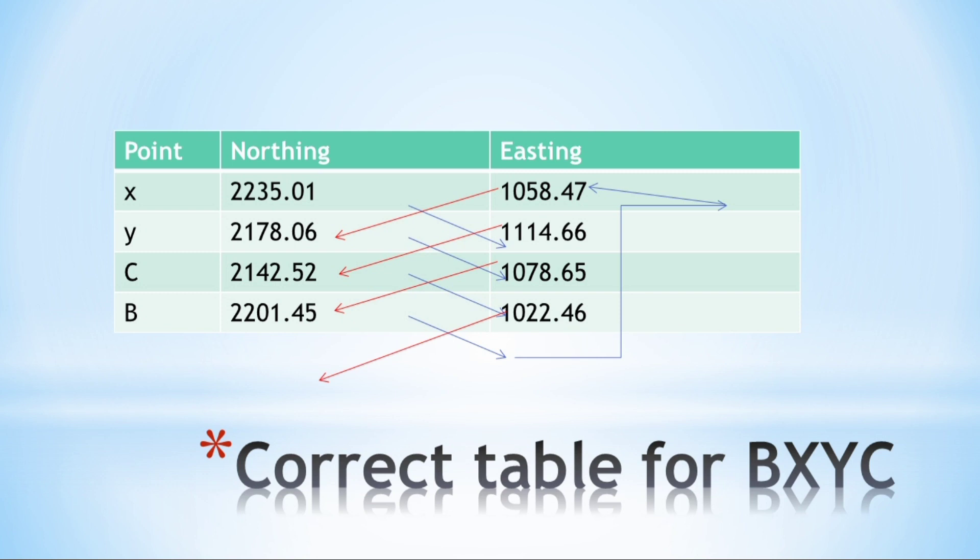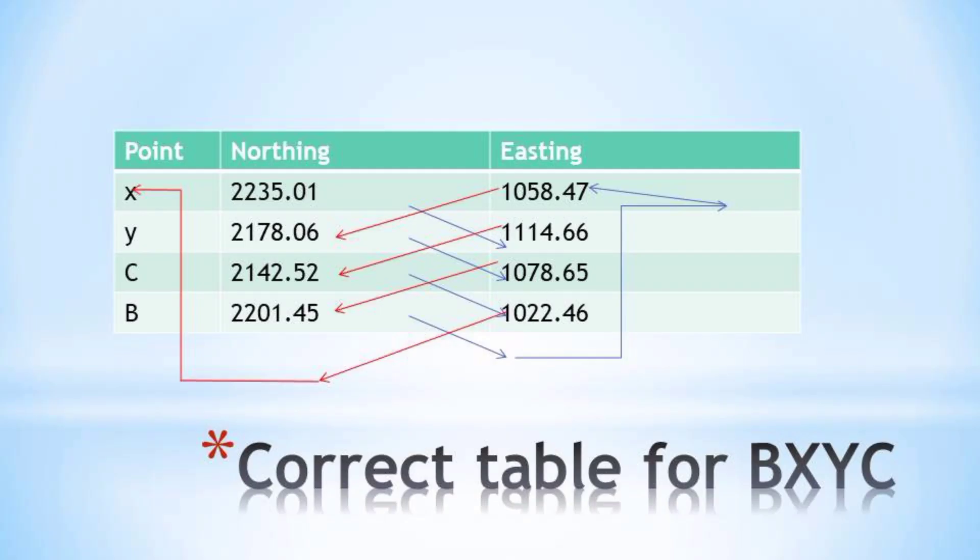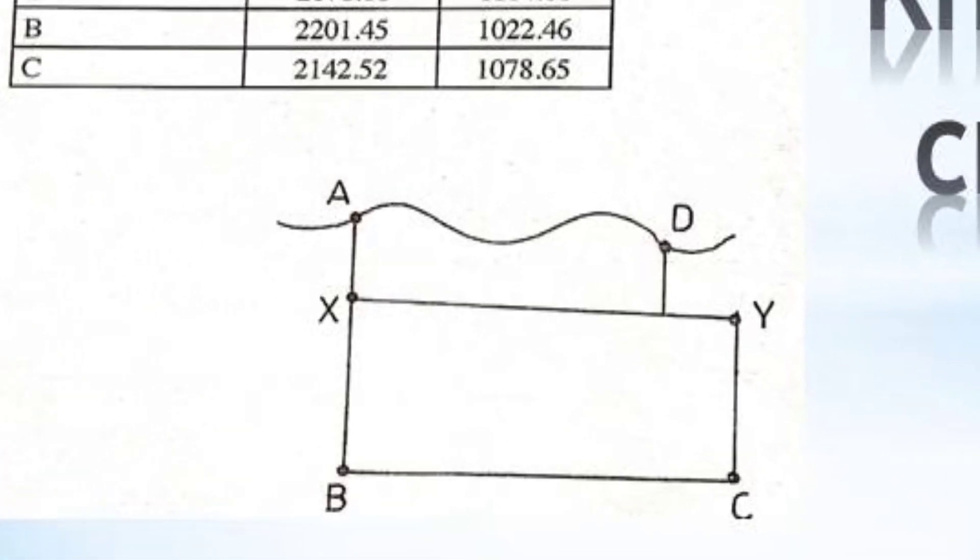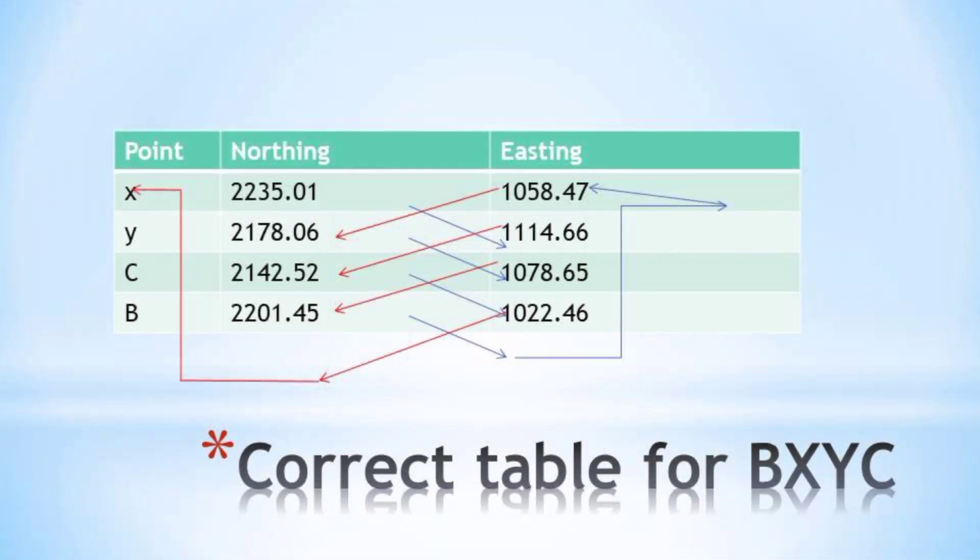You will repeat that table starting with point X to Y to C to B, so B and C will interchange. You are going with the diagram because that will give you a more correct answer.